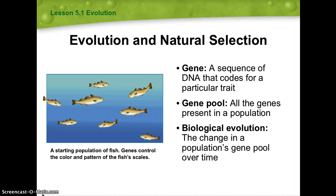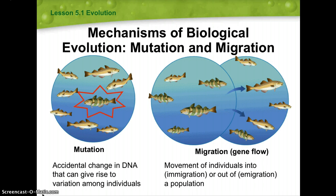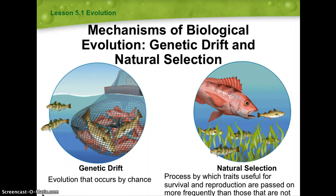Going back to genetics: the gene codes for a trait, the gene expression is the genotype, and what the genotype expresses physically is the phenotype. Biological evolution leads to changes in the frequency of an appearance or behavior from generation to generation. The mechanisms of biological evolution include mutation — an accidental change in DNA that gives rise to variation among individuals — and migration, which is gene flow: the movement of individuals into (immigration) or out of (emigration) a population.